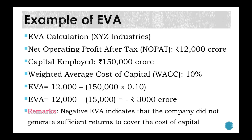EVA example 1: For XYZ industry, NOPAT = ₹12,000 crore, Capital Employed = ₹1,50,000 crore, and WACC = 10%. Applying the formula: EVA = 12,000 − (1,50,000 × 0.10) = 12,000 − 15,000 = −₹3,000 crore. The negative EVA indicates that the company did not generate sufficient returns to cover the cost of capital.